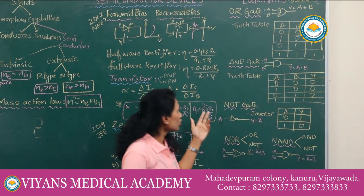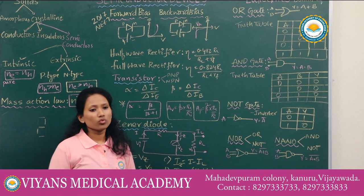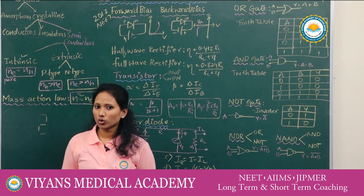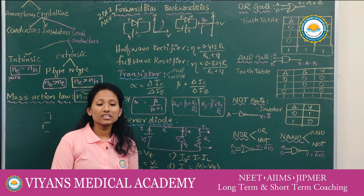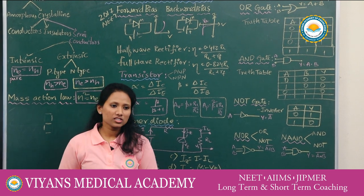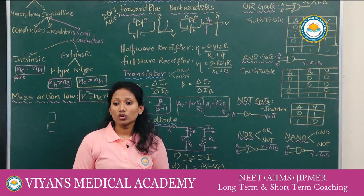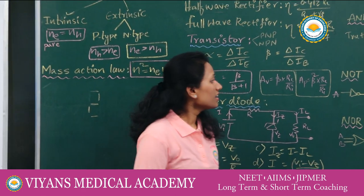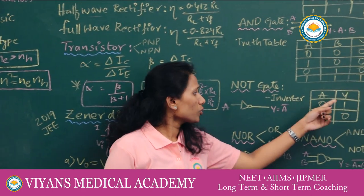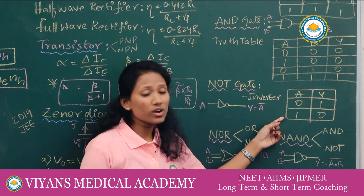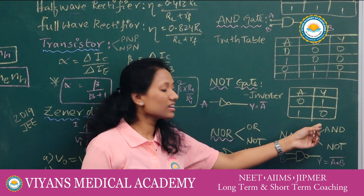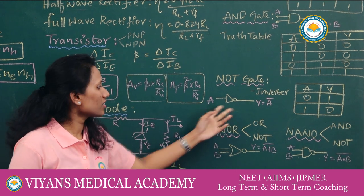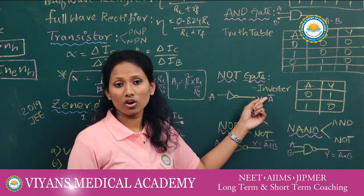In the NOT gate, only one input is given and we get one output, but the input is completely inverted. So NOT gates are called inverter gates. If input is 0, output is 1; if input is 1, output is 0. The output is written as Y = Ā (A NOT).